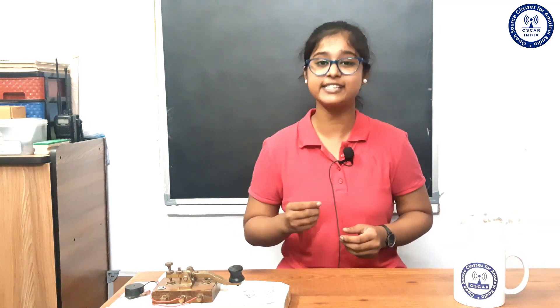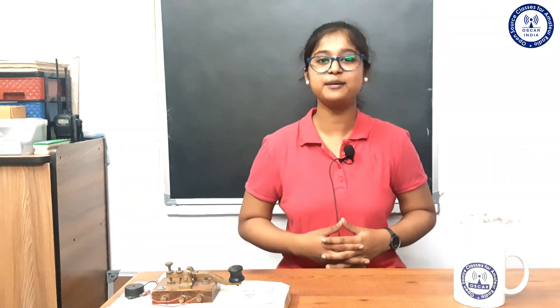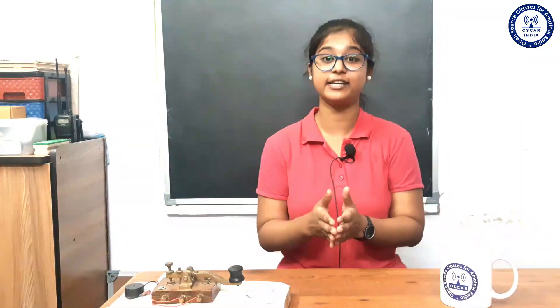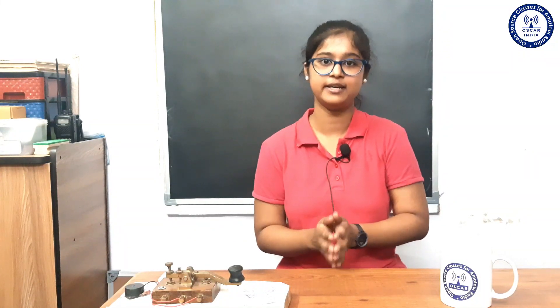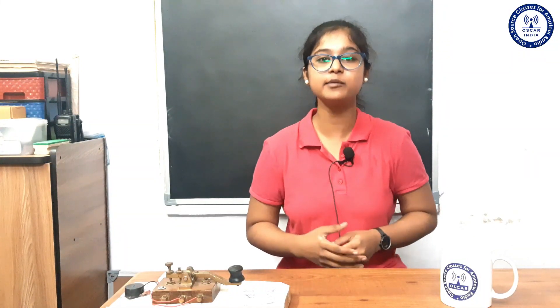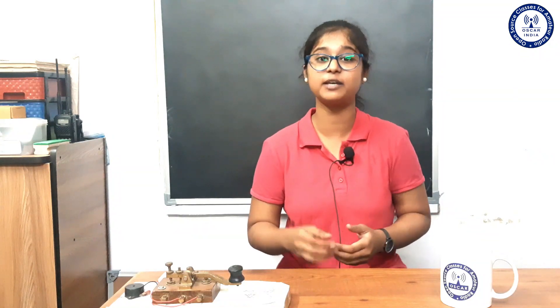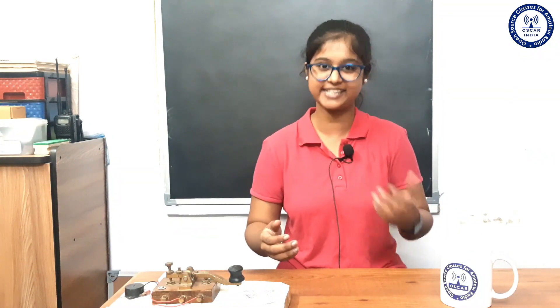Telegraph operators would send messages using a series of clicks based on the spelling of the words of the message, and a telegraph operator on the receiving end would hear these clicks and translate them back into words. The Morse code consists of two characters: the dot, known as dit, and the dash, known as da. In the Hindi movie Raji and the South Indian movie Vivegam, you can see the transmission of Morse by beating utensils, blinking, etc.